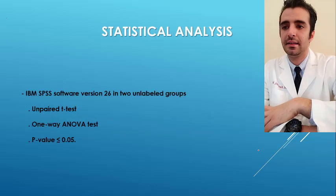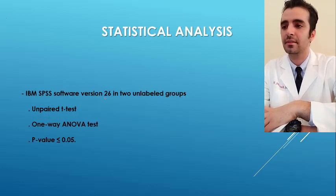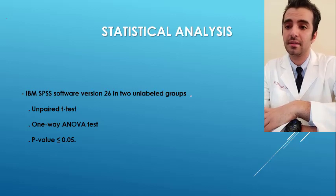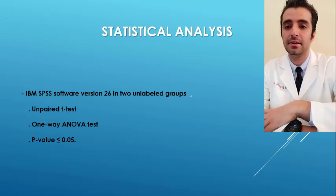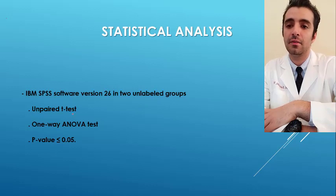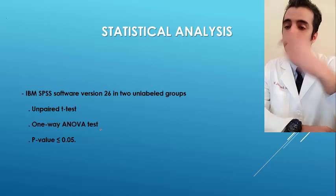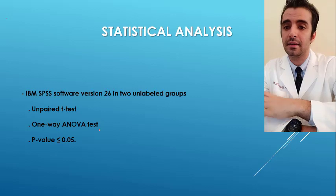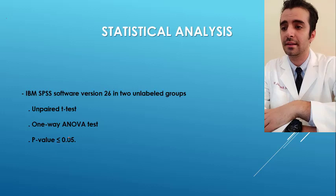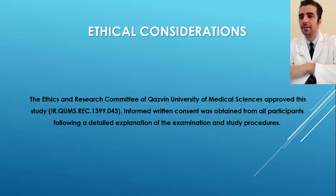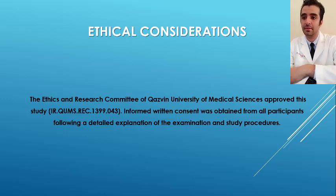All collected data were analyzed using IBM SPSS software version 26 in two unlabeled groups to blind the analyzers. This pilot study was conducted to estimate the sample size needed for future studies due to lack of prior data. An unpaired t-test was used to analyze all variables between groups, and one-way ANOVA was applied to analyze variables between the various days; statistical significance was set at p ≤ 0.05. The ethics and research committee of Kazvin University of Medical Science approved this study, and informed written consent was obtained from all participants.